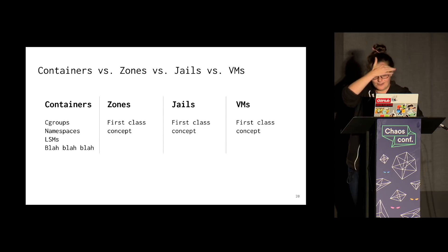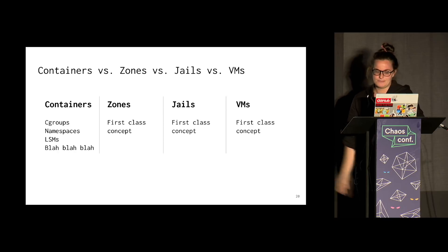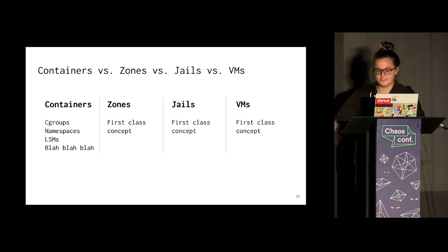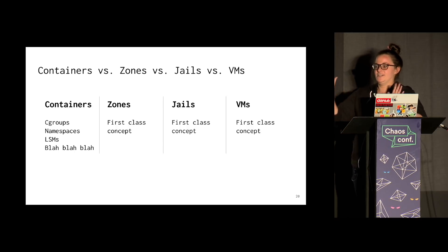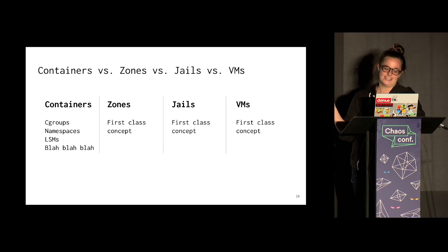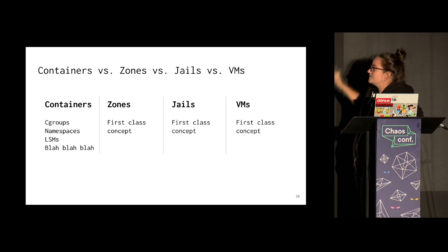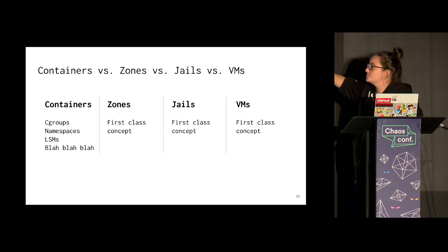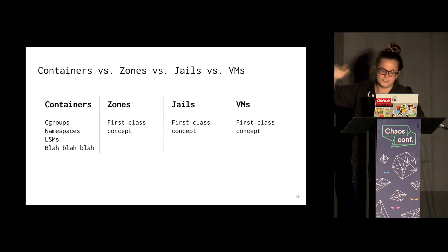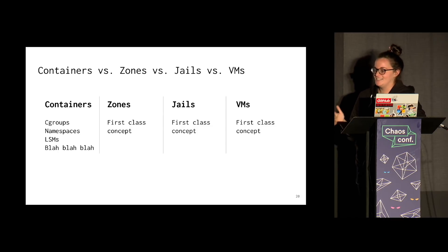Before containers, there were zones, jails, and VMs — all first-class concepts. If you're on Solaris, you just create a zone. On FreeBSD you can create jails. VMs are first-class concepts as well. But containers are made up of cgroups — control groups — namespaces, and LSMs — Linux security modules — and then all this other stuff and duct tape. All of this together forms containers. So real primitives, not a single real thing.